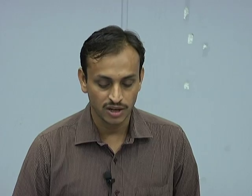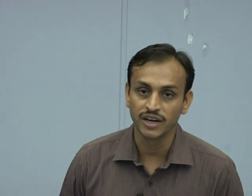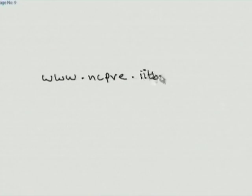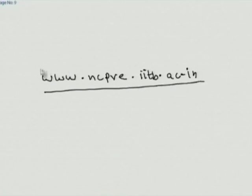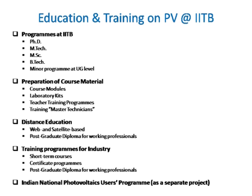These programs may cover basics of solar cells, grid-connected photovoltaic systems, power electronics for solar photovoltaics, and similar topics. Several of these programs are announced on our website. The website is www.ncpre.iitb.ac.in — once you go there you will find a lot of information about training programs and research happening at IIT Bombay. These are the various activities we are doing at IIT Bombay in terms of training and education on photovoltaics.